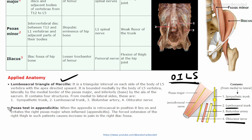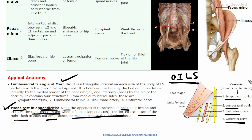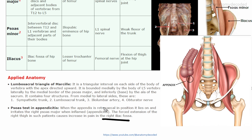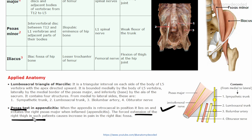Psoas major is also involved in appendicitis. When the appendix is retrocecal in position, it lies on and irritates the right psoas major. Forced extension of the thigh in such a patient causes increased pain in the right iliac fossa because extension stretches the psoas major against the inflamed retrocecal appendix. This test is called the psoas test — extension of the hip joint is performed and the patient complains of exaggerated pain.